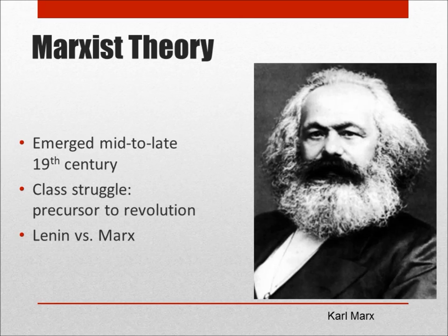Vladimir Lenin reinterpreted Marxist theories by arguing for the role of what he called a revolutionary vanguard. According to Lenin, an educated working class revolutionary — the so-called vanguard of the socialist movement — would spread revolutionary ideas to the population. And Lenin thus argued, contrary to the teachings of Marx, that revolutions could indeed emerge in peasant-based societies with the proper revolutionary vanguard to lead the peasants.